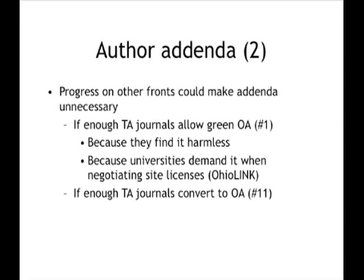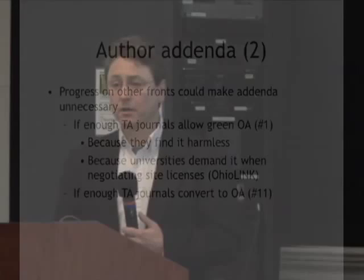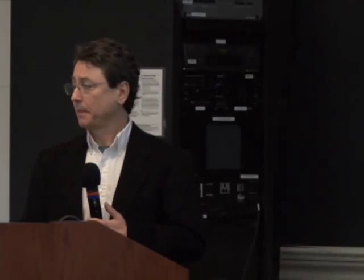I want to mention what OhioLINK has been doing since 2006. When it negotiates site licenses for universities within Ohio — representing all universities in Ohio — it asks for permission for Ohio authors to deposit in the repository without further permission or payment. Insofar as they succeed, they make author addenda unnecessary. It's a great strategy. I wish more universities would adopt it. As you negotiate site licenses, you're really bargaining on behalf of your readers, but take a moment to bargain on behalf of your authors at the same time and say: if we pay you all this money for the site license, we want the right without further permission to deposit in the local repository.